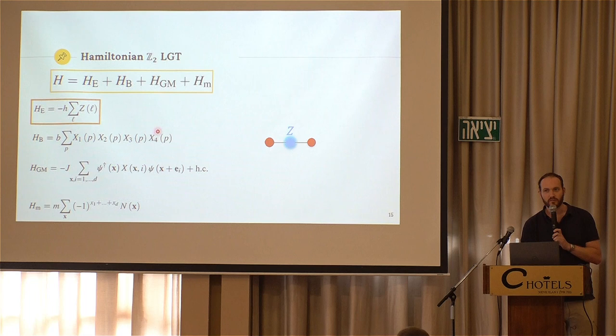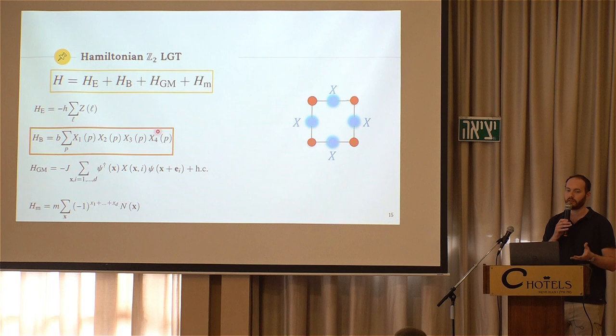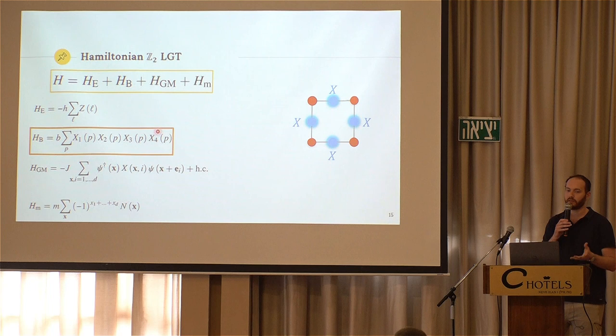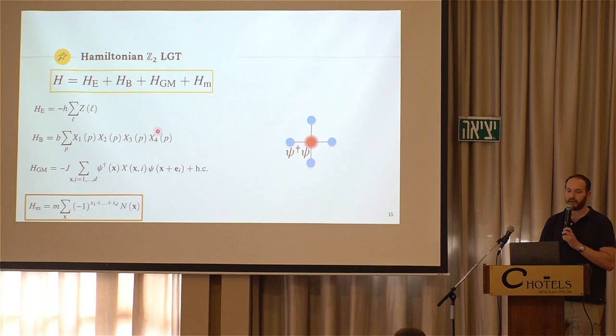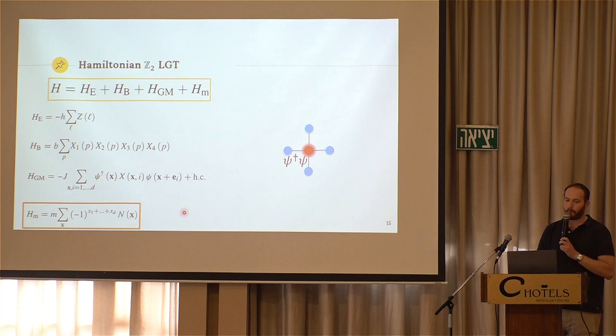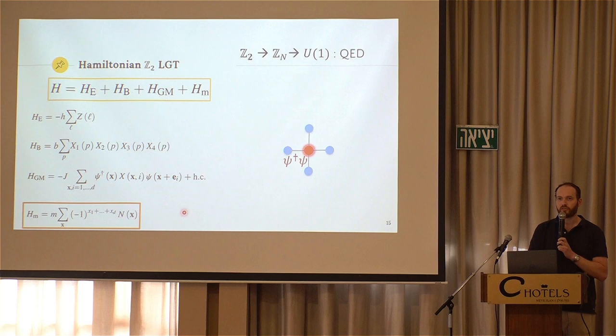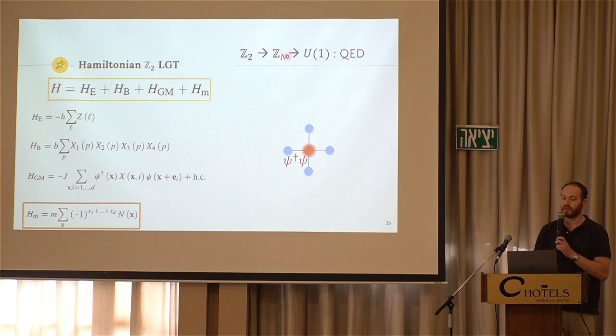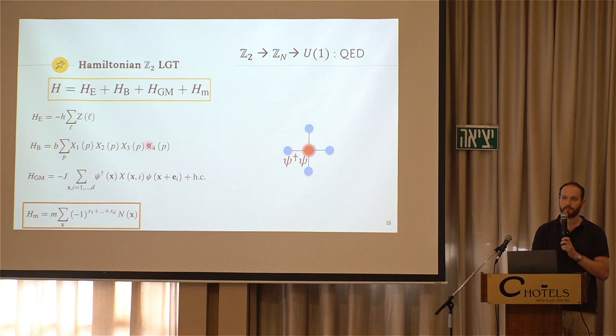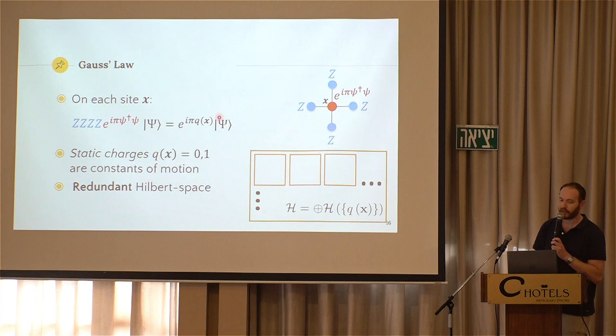The Hamiltonian for the theory is this one, it has four terms. The first one is called the electric field term, and it's just a local term, a Pauli Z on all the qubits. The second one is still a gauge field term, and it's a four-body interaction of the gauge field. This is called the magnetic term. We have the interaction of the matter and the field, and you have this mass term, which just counts the number of particles. You can ignore this alternating sign. It's a technical thing that has to do with how you take the continuum limit of these kinds of theories. The reason for those names, electric, magnetic, et cetera, is because you can think of it, if you generalize from Z2 to Zn, and then you take the n goes to infinity limit, you get U(1), and U(1) in the continuum limit is electrodynamics. So if you do all these limits, you indeed get that this term here is the electric energy, and this term here is the magnetic energy.